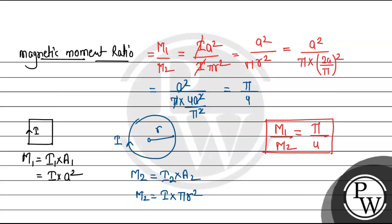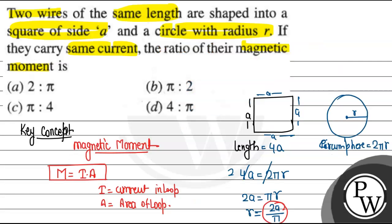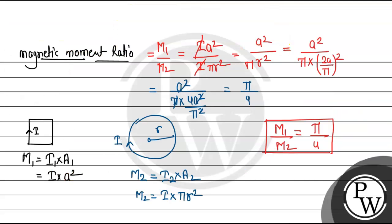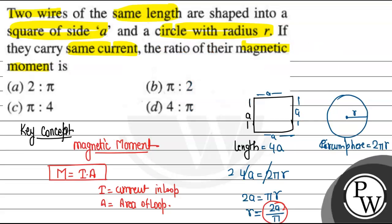This is the answer for this question. Going back to the options, π/4 is option number C. I hope you understood it well. Best of luck, thank you.